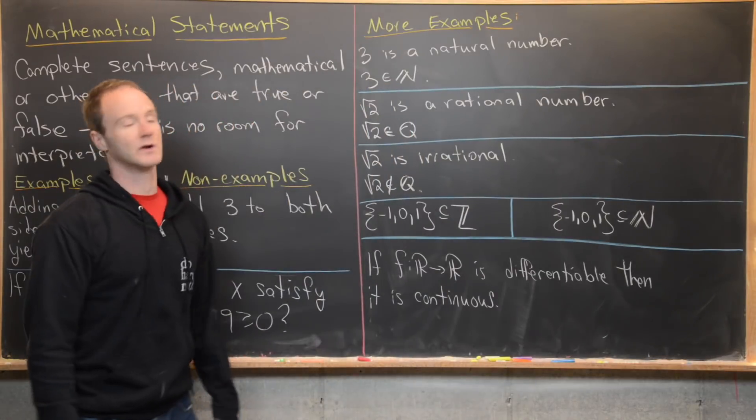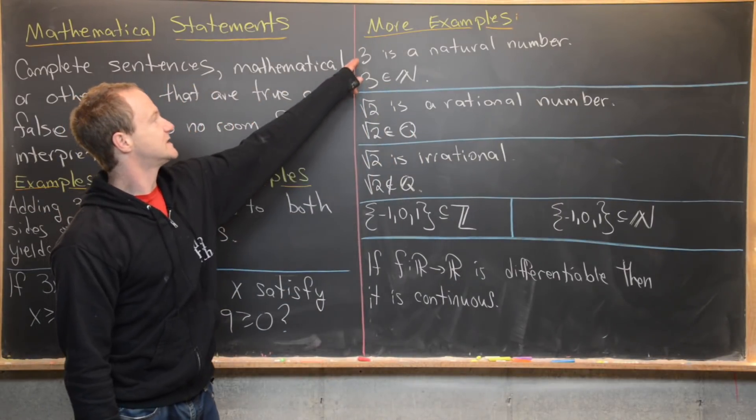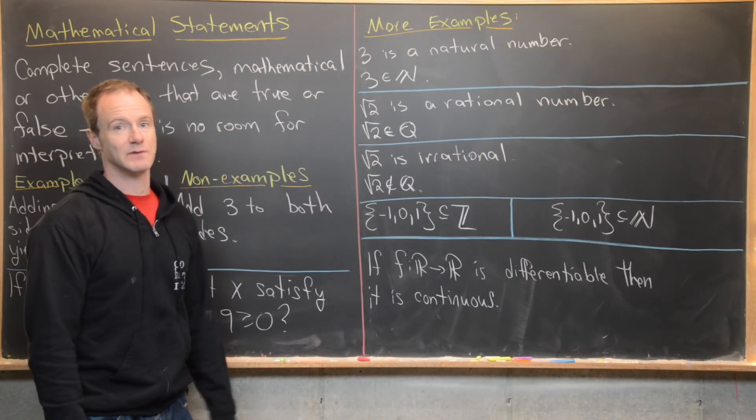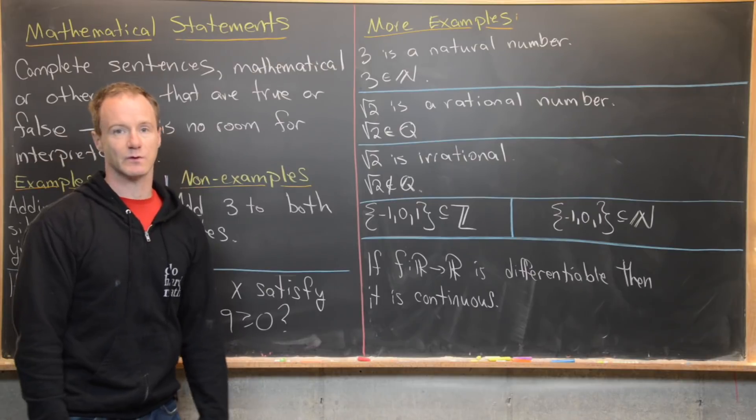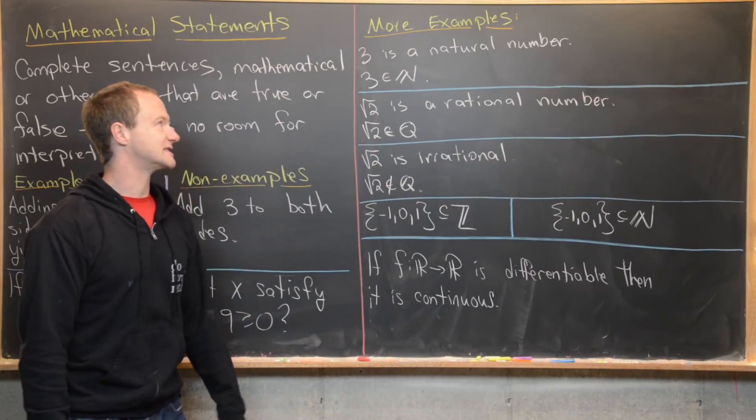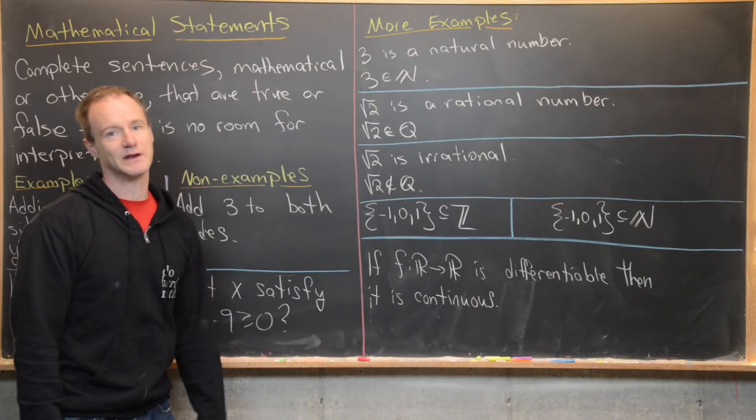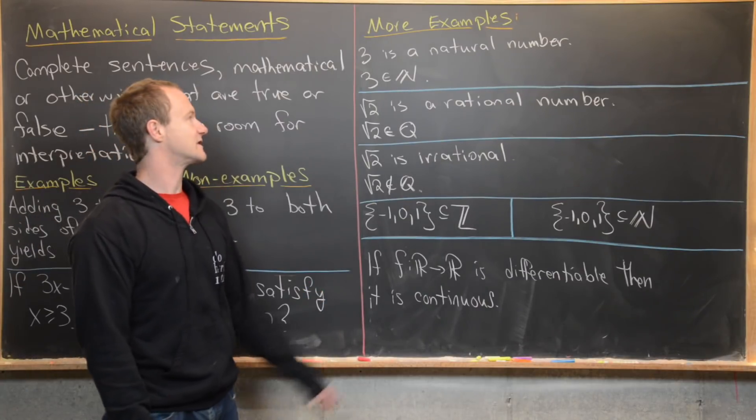Here's some more examples. These two are exactly the same mathematical statement. One is just written with mathematical notation, whereas the other one's written with words. We have three is a natural number, and here we have three is an element of the natural numbers. Those are exactly the same. This is just using math notation.